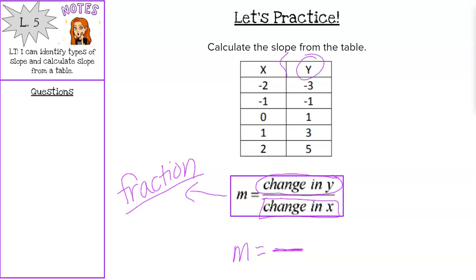We're going to start with our change in y values. So if we wanted to get from negative three to negative one, how much would we need to add or subtract? Well, we would need to add two to get from negative three to negative one. Now let's do negative one to positive one. We would still have to add two. One to three, we would have to add two. Three to five, add two. So you can see consistently we're adding two. So that is your change in y plus two. So on the top of my fraction, I'm going to put a two.